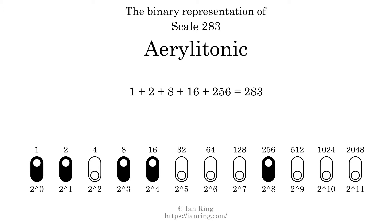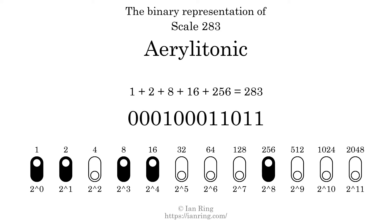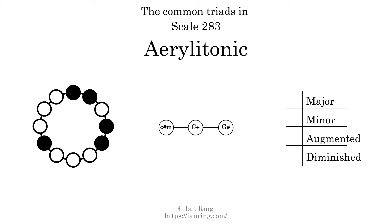The scale number not only enumerates the scale with a unique index, but it also literally describes the tonal content of the scale. Represented as a binary number in base 2, the scale number is 0, 0, 0, 1, 0, 0, 0, 1, 1, 0, 1, 1, 0, 1, 1.